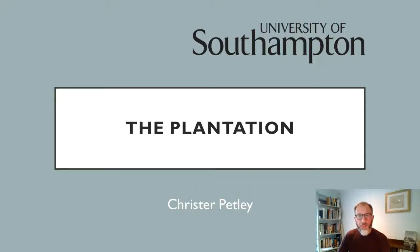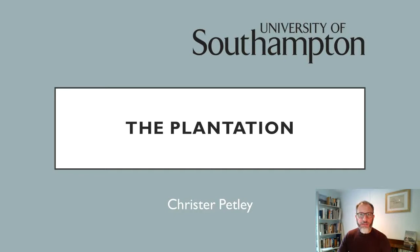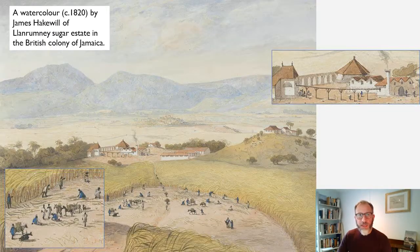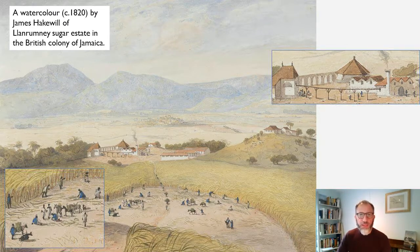We're going to talk about the plantation, the institution that was at the centre of the Atlantic slave system and the institution that drove the demand for enslaved labour that lay behind the slave trade. I'd like to start by asking you to take a look at this picture. It's by the English artist James Haqueville of a plantation in the British island colony of Jamaica towards the beginning of the 19th century.